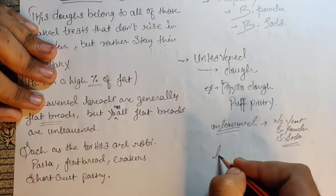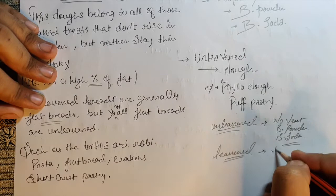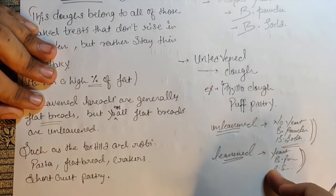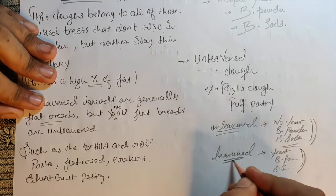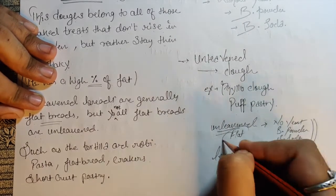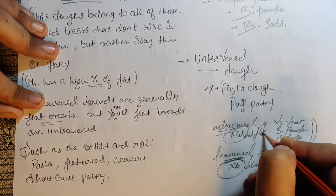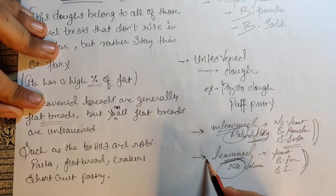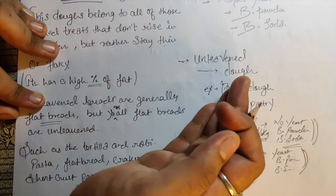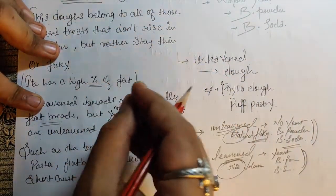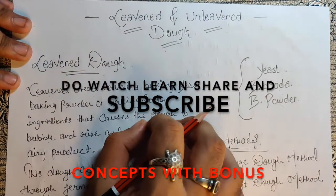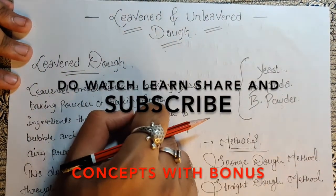To summarize: leavened dough uses yeast, baking powder, and baking soda, and it rises to give volume. Unleavened dough uses none of these agents, so it stays flat and flaky. I hope you are clear with this topic — it's very simple but very important to know which breads are leavened and which are unleavened. I'll see you in the next informative video, bye bye!